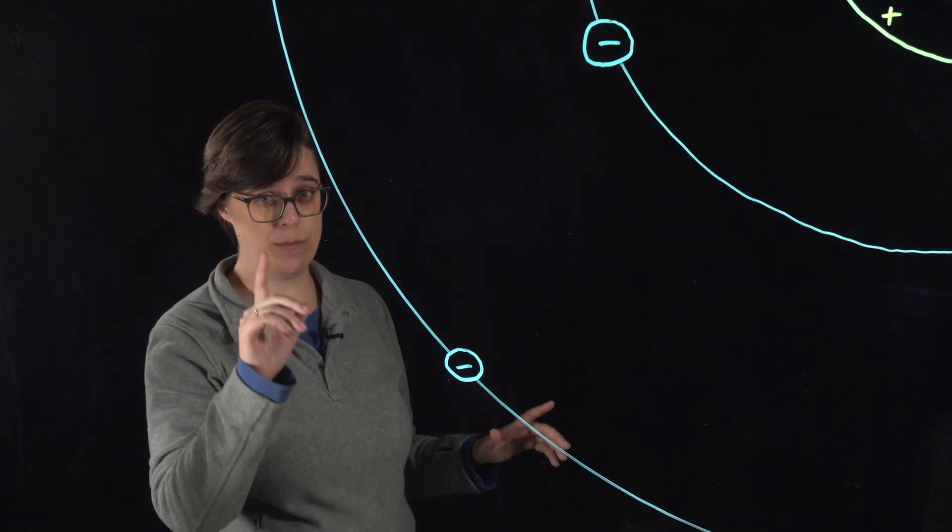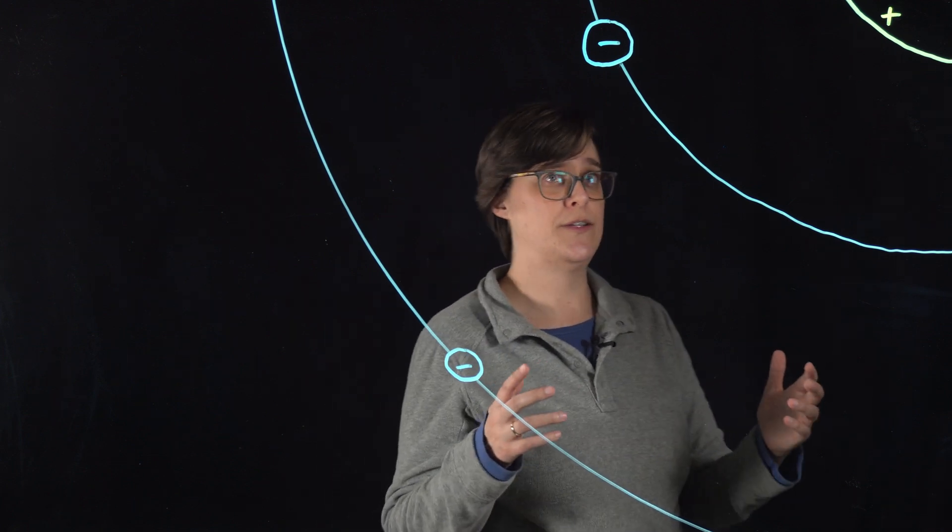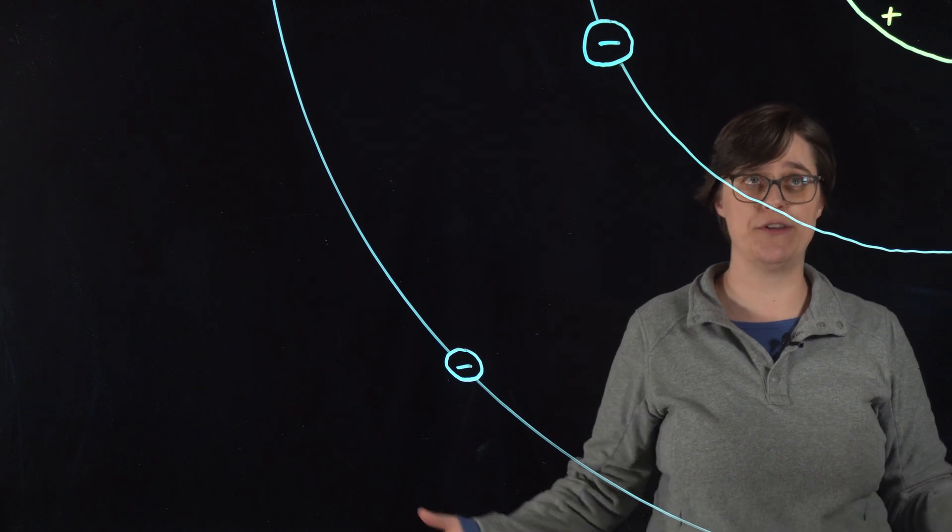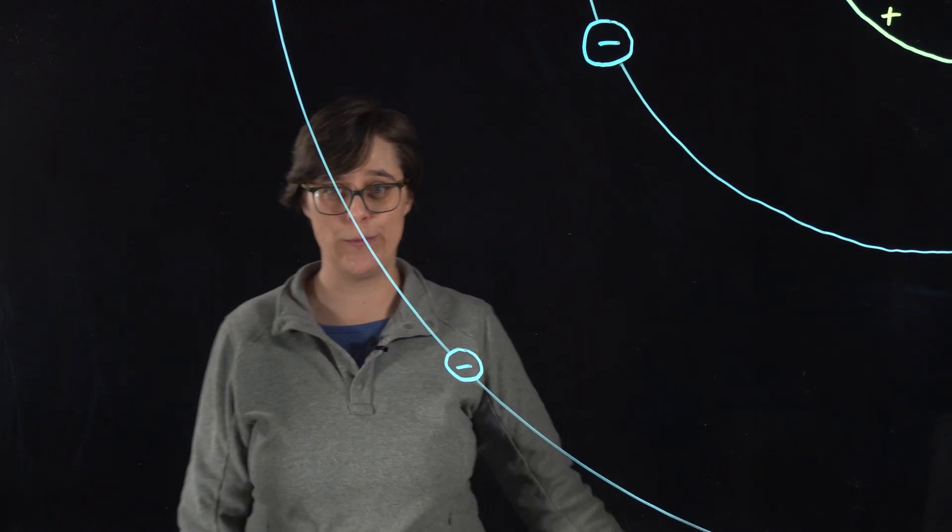But, you can probably say it with me at this point, this isn't quite right. Opposite charges attract, so the obvious question is, why do these not just crash into each other, causing the atom to collapse? And to answer that question, we need the help of Niels Bohr.